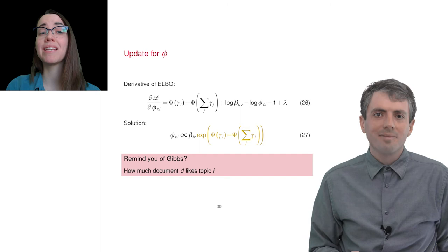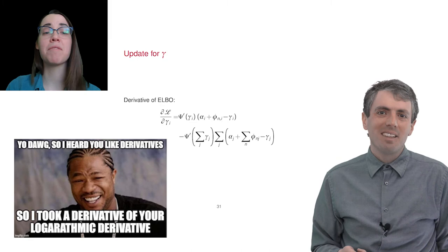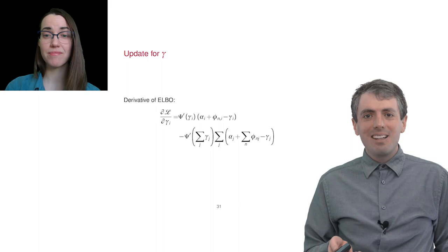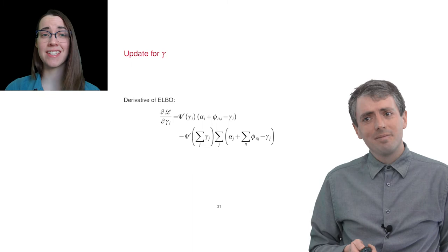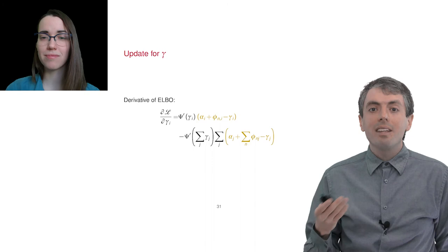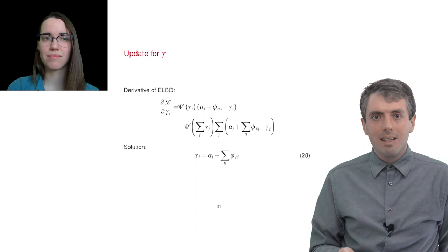The update for gamma, how much the document likes a topic, is a little more difficult. What's that mark next to the digamma function? So I heard you like derivatives. In this case, even though the digamma function is itself the derivative of the log of the gamma function, we're going to need to take the derivative of that. So digamma prime is the derivative of the digamma function. So how the heck do we solve when this is equal to zero? Thankfully, it turns out you can ignore the digamma function. If you stare at the whole thing, you can see the only way to make this zero is when the terms with alpha, phi, and gamma are zero. So then the update is fairly intuitive in the end. It's almost like you're summing up the expected counts for how much the document uses a topic over all words and then smoothing it with the hyperparameter alpha.